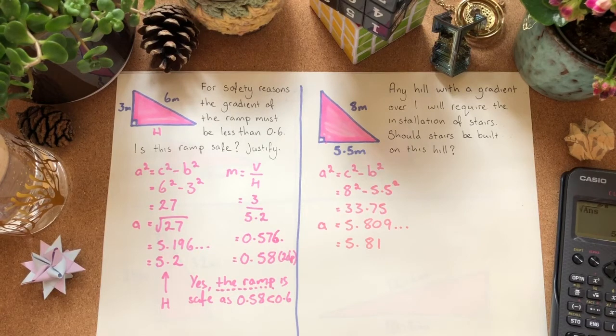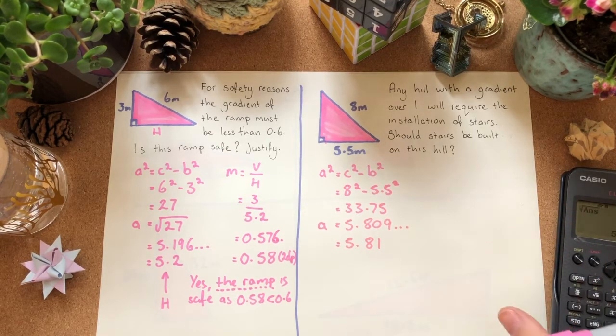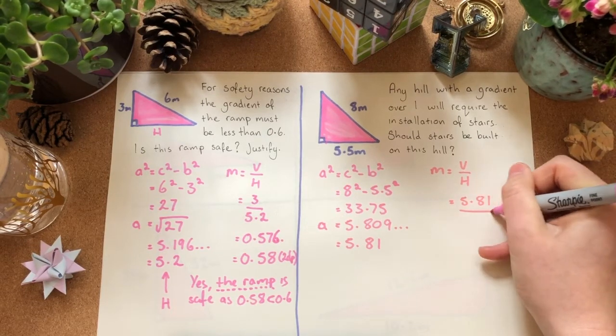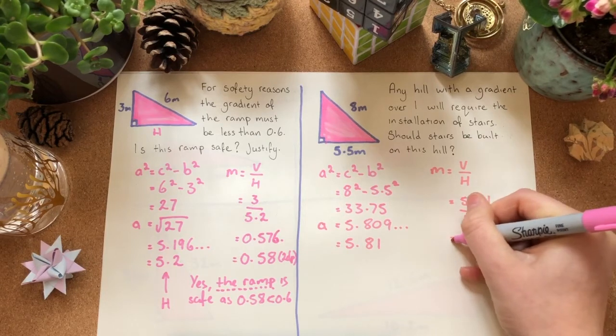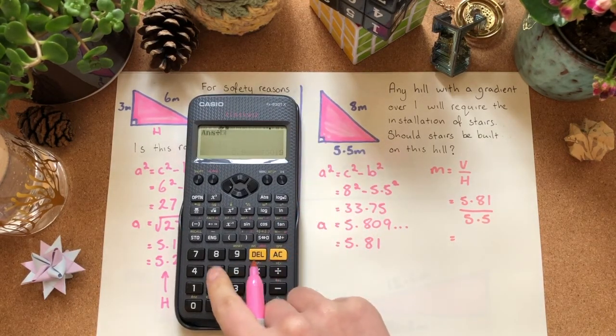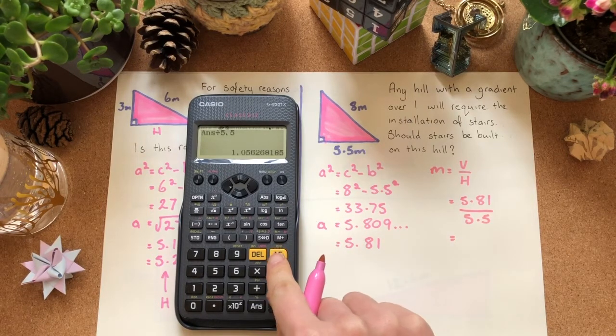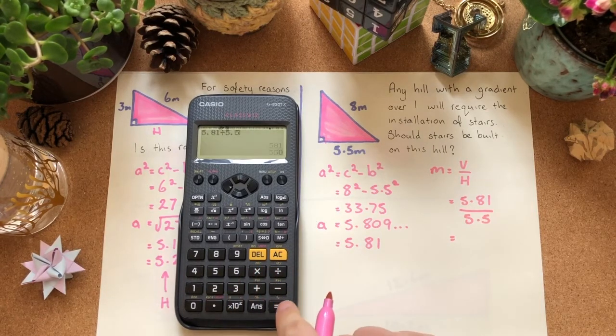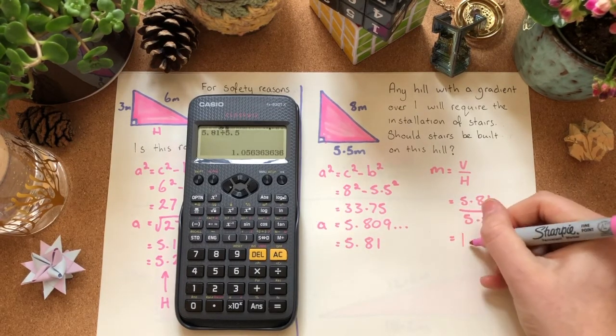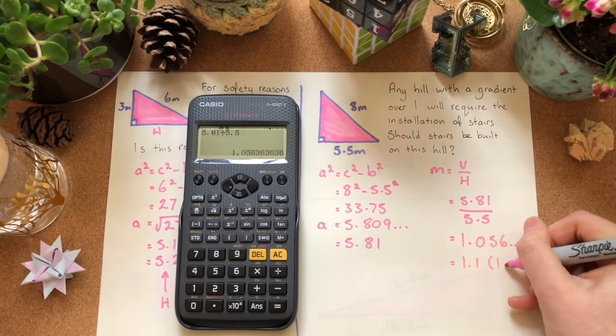Ideally, you want to keep your answer as unrounded as possible during calculations. But obviously, you don't want to type in loads and loads of decimals, so it just depends how good your calculator is with the answer button. Now we know the vertical height now is 5.81 or thereabout. Horizontal height is 5.5. If I was being super accurate, I can just keep my entire decimal in the calculator and just divide that by 5.5. Giving me 1.056. Which is more than 1. Let's just compare what that would be like with this rounding that we've done here. So 5.81 divided by 5.5, 1.056. Cool. Inconsequential rounding at this stage. So, yep, we've got 1.056 blah blah blah. Which we can round to 1.1 if we're going to go for one decimal place. And then answer the question.